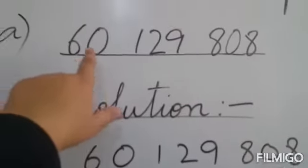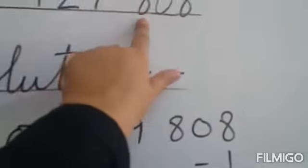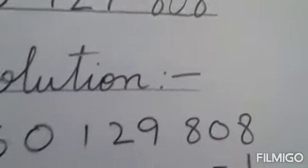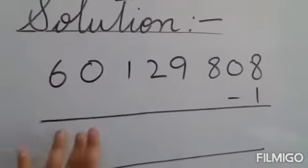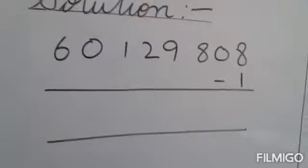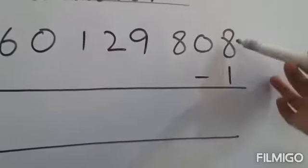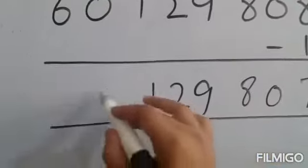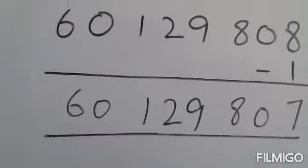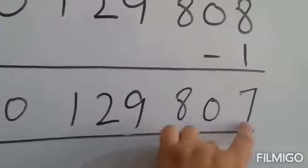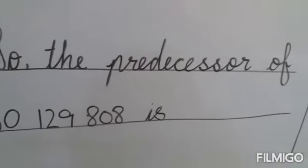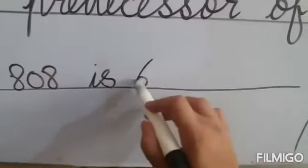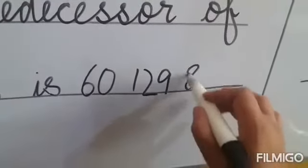A number is given: 60,129,808. We have to find its predecessor. We will write the solution in proper subtraction form. When we subtract 1 from 8, we get 7. All the other numbers will remain the same because there is no other number under them to subtract. We have got 60,129,807. So the predecessor of 60,129,808 is 60,129,807.